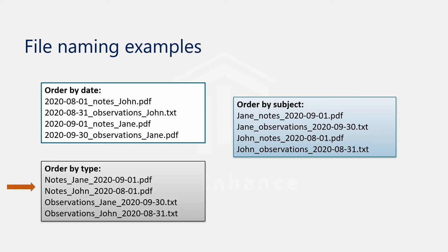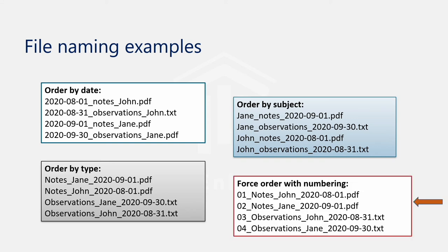The third example shows files ordered by type—all notes ordered together, etc. And the last example is forced order with numbers. Note a two-digit system. Depending on how large your file collection is, you may need to use a three-digit system.